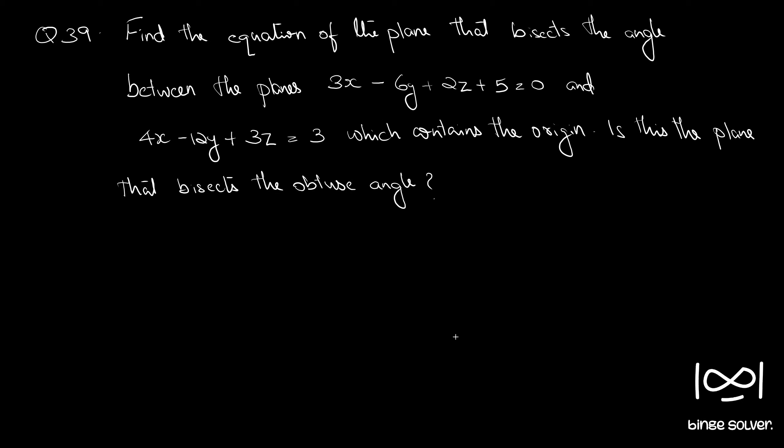Question 39: Find the equation of the plane that bisects the angle between the planes 3x minus 6y plus 2z plus 5 equal to 0 and 4x minus 12y plus 3z equal to 3, which contains the origin. We also need to check whether this is the plane that bisects the obtuse angle.